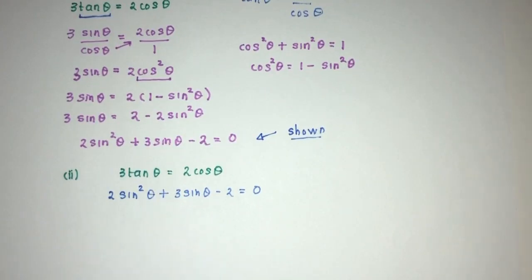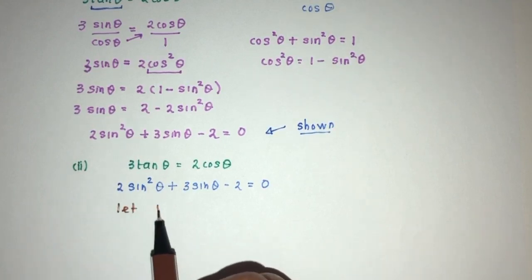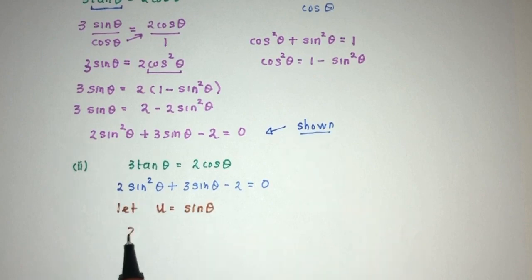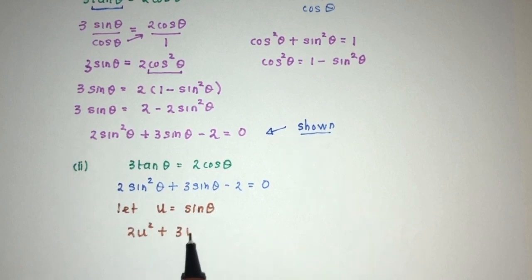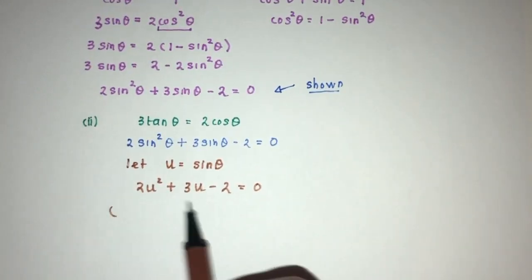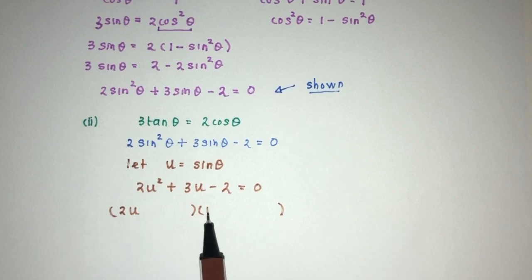Now, as you can see, clearly, it will be a quadratic equation. However, if you guys have some issues working with sin² and stuff, you can always let u equal to sin(θ) for now. So you will have 2u² + 3u - 2 = 0. Now, it is much simpler to look at. Now, again, we have to factorize and try to solve this quadratic equation.